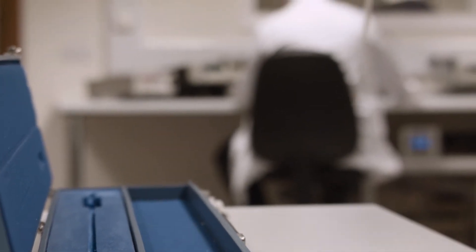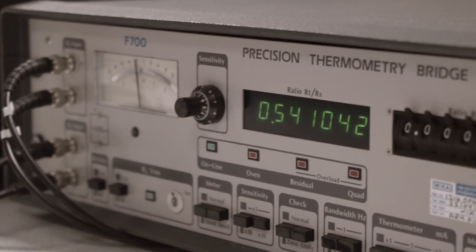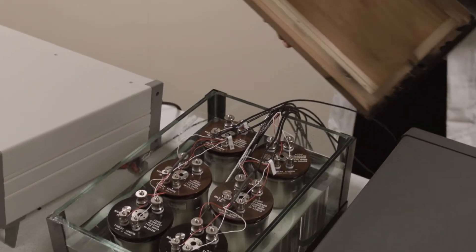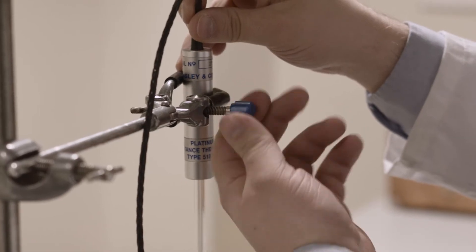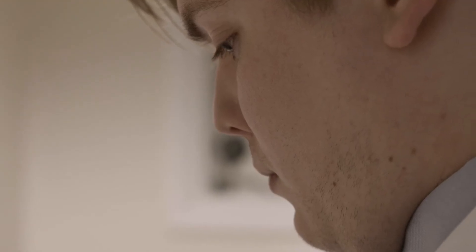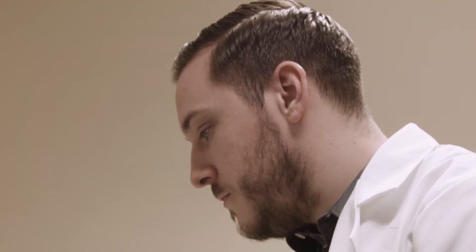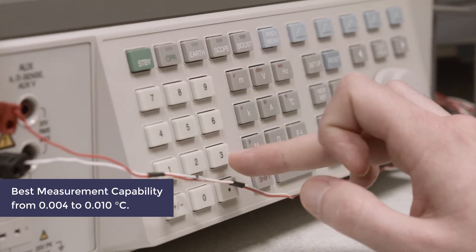Test measurements are made when testing and calibrating resistance thermometers using a range of laboratory AC and DC resistance bridges. These use Wilkins standard resistors as reference standards. For measurements made using this equipment from minus 200 up to and including 525 degrees Celsius, the best measurement capability granted by UCAS to the laboratory is between 4 and 10 thousandths of a degree Celsius.